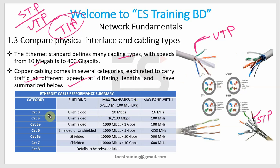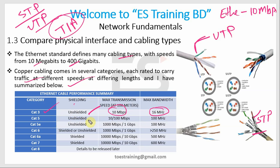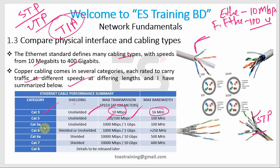CAT3 is unshielded, with speed up to 10 Mbps and max bandwidth of 16 MHz. CAT5 is unshielded, supporting 10 to 100 Mbps — that means Ethernet (10 Mbps) and Fast Ethernet (100 Mbps). CAT5e is also unshielded, with speed up to 1000 Mbps (1 Gbps).